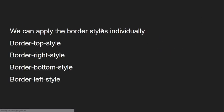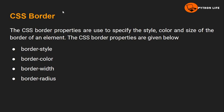So, CSS borders have four properties: the first one is border-style, the second is border-color, the third is border-width, and the fourth is border-radius. In the next class, we will create and execute a practical web page where we will click on each and every property and demonstrate them.